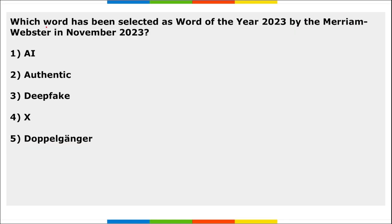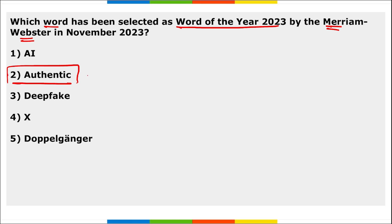Next: which word was selected as the word of the year 2023 by Merriam-Webster? It is 'Authentic.' Authentic means true — not false or imitation — true to one's own personality, spirit, or character. 'Authentic' is the word of the year by Merriam-Webster 2023.